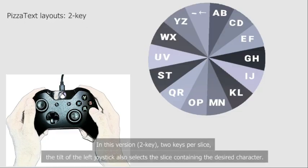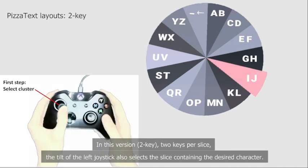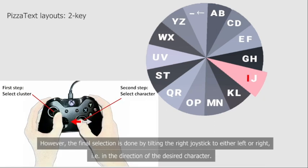In the two-key version, two keys per slice, the tilt of the left joystick also selects the slice containing the desired character. However, the final selection is done by tilting the right joystick to either left or right, in the direction of the desired character.